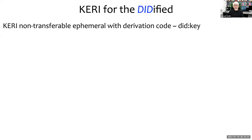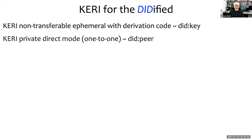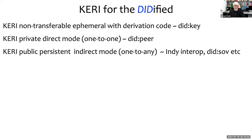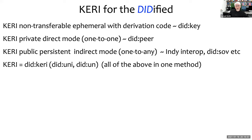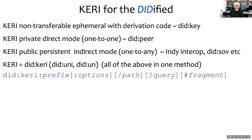For those familiar with DIDs: KERI supports a non-transferable or ephemeral identifier with a derivation code, comparable to did:key. KERI also supports a direct mode one-to-one, comparable to the one-to-one mode of did:peer. And KERI supports a public persistent indirect mode, like the one-to-any mode of did:peer with various forms of interoperation with ledgers. There is a did:keri method — we've considered names like did:uni or did:un, but did:keri has become popularized enough that it will be the DID method, looking like a standard DID method with KERI as the prefix.